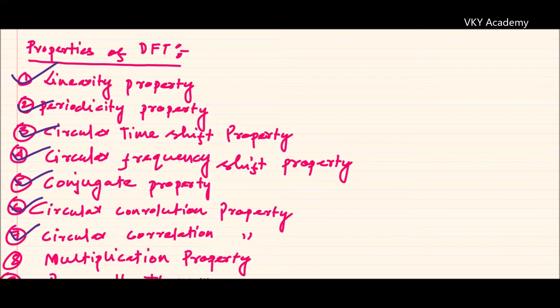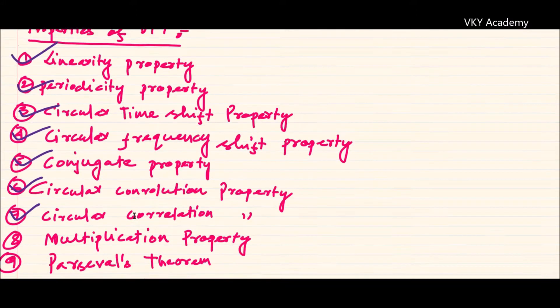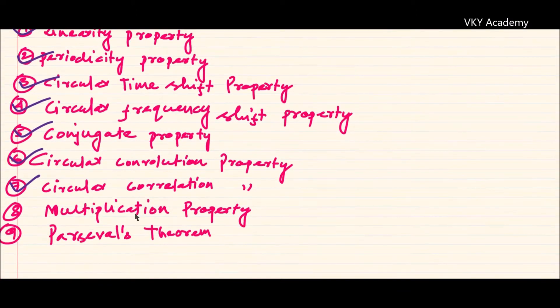The seventh one is the circular correlation property, the eighth one is the multiplication property, and the ninth one is Parseval's theorem.